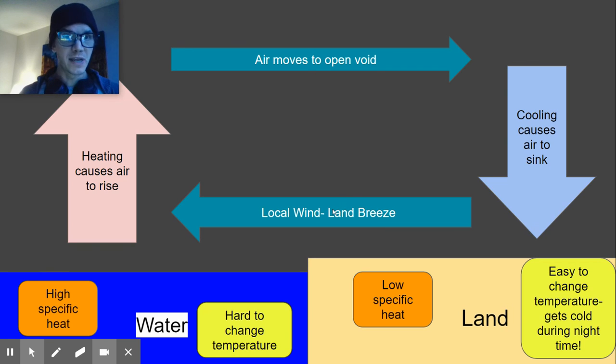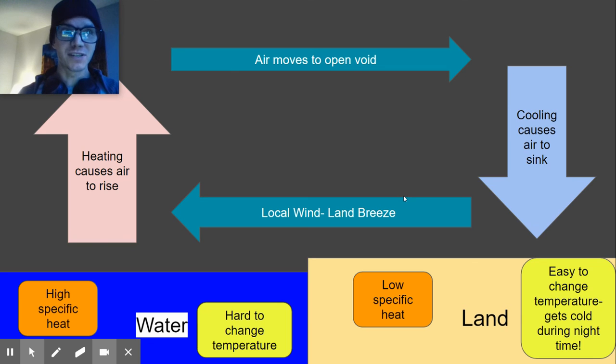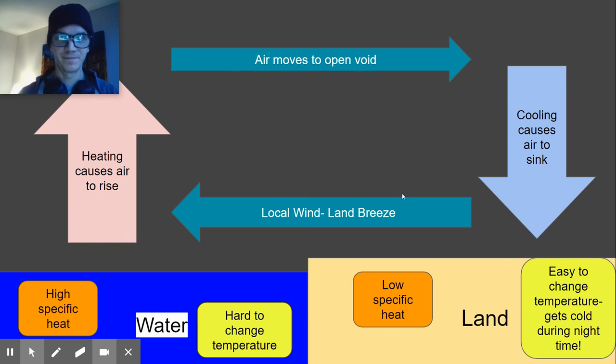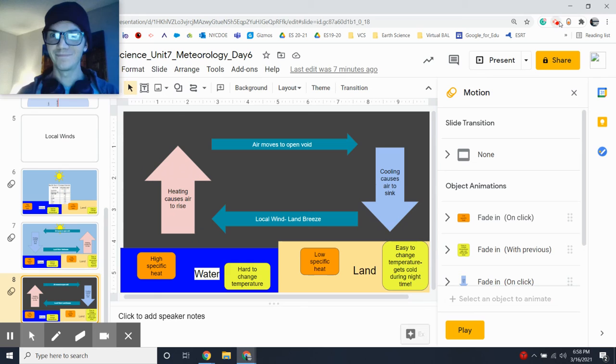So those are three examples of how the uneven heating of earth's surface creates wind on earth. Bye!